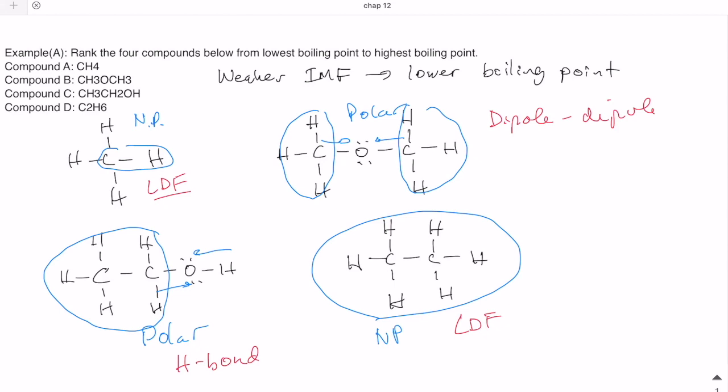Now, we have two molecules with London forces. So we have to compare which one is a stronger London force. London force is a type of force that depends on the size of the molecule. The larger the molecule, the easier it is to polarize the molecule, making those temporary dipoles stronger. The LDF for this larger molecule is going to be stronger. So we can say here a stronger LDF. And as a result, once we have that, we can rank the four compounds.